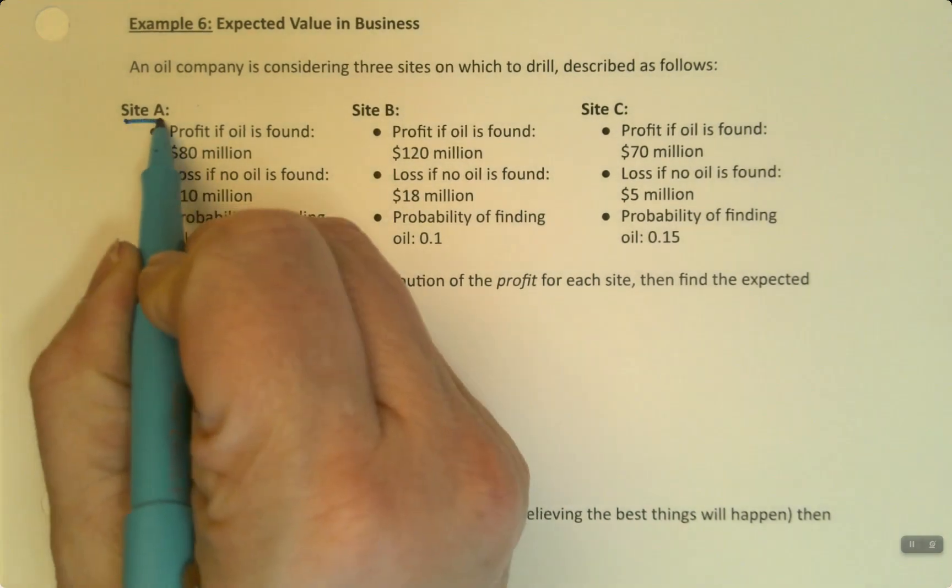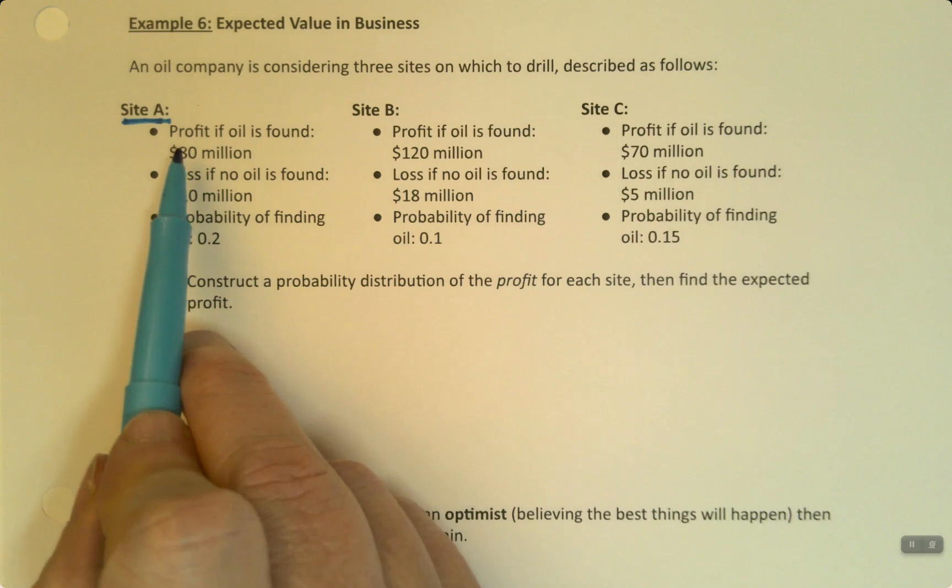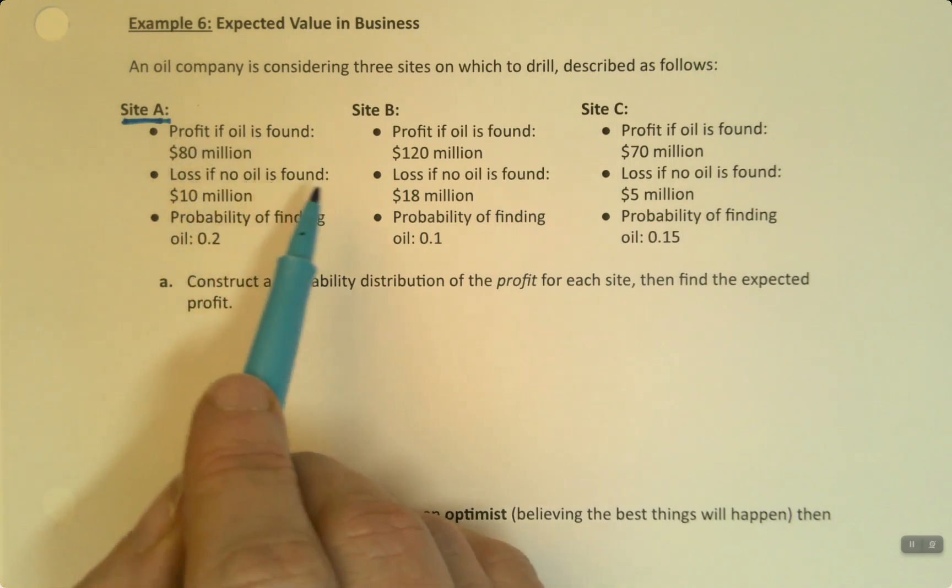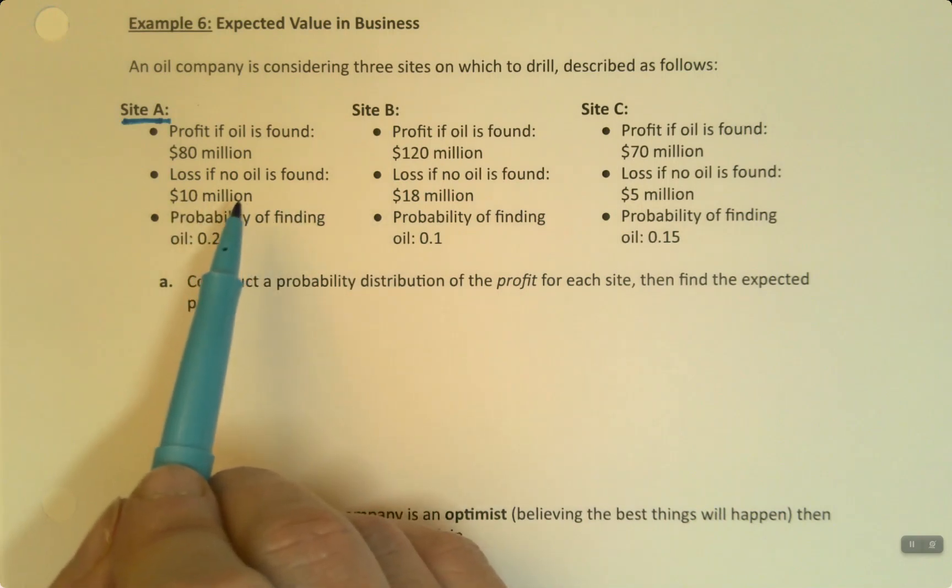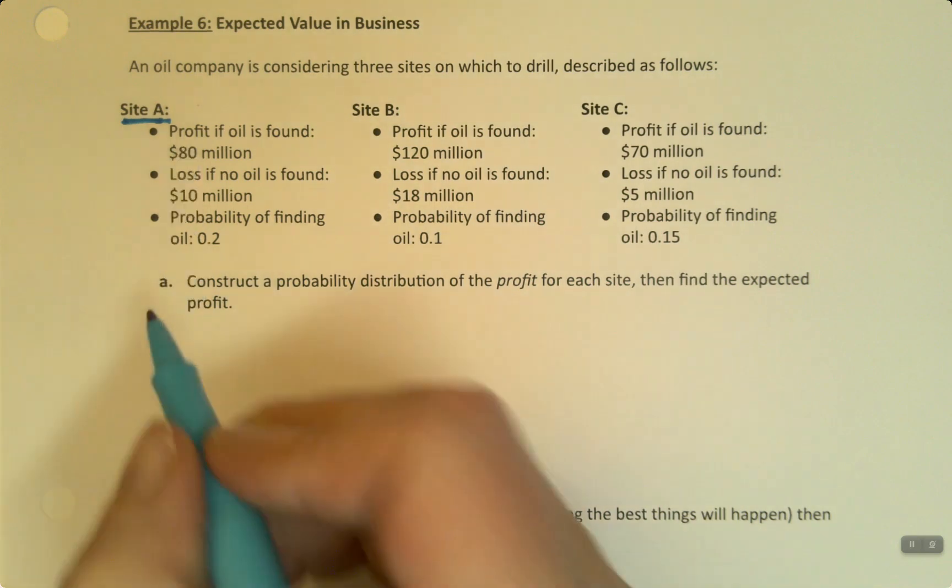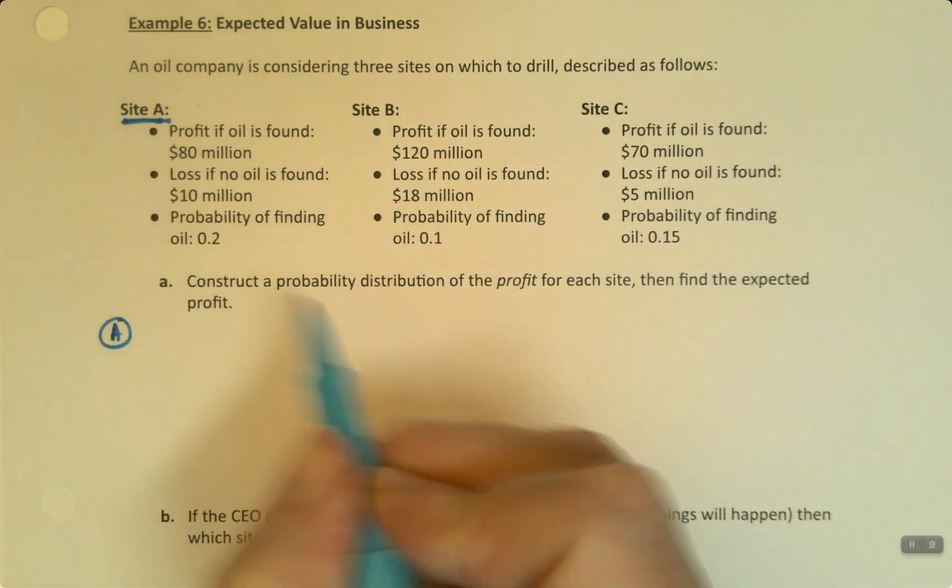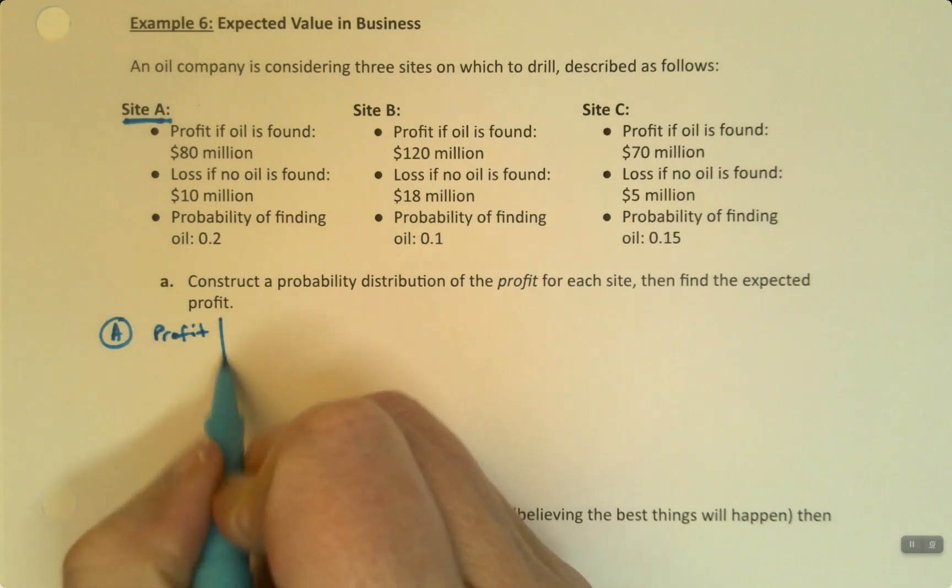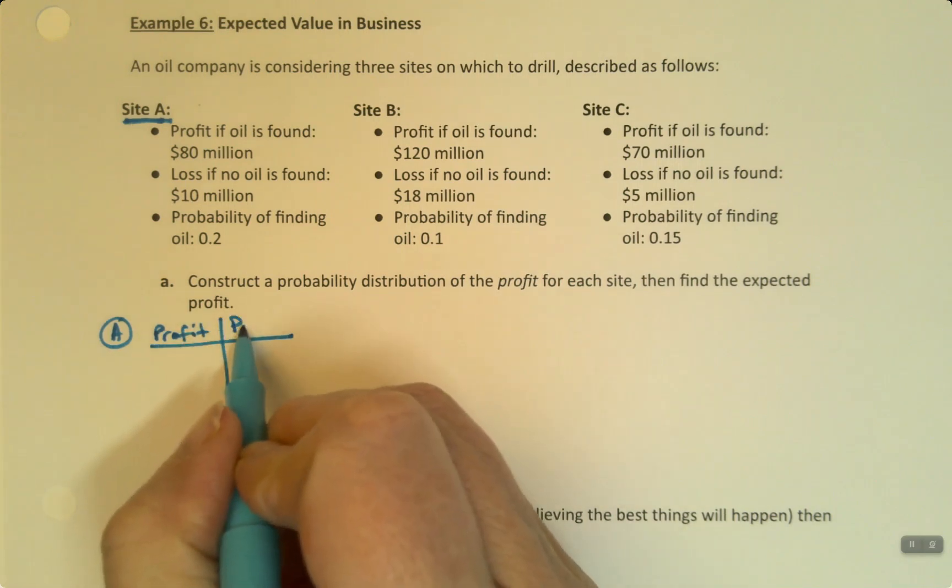So we have site A right here. Site A has potential profit if oil is found of 80 million, and has a loss if no oil is found, which is 10 million. And then the probability of finding the oil is 0.2. So let's make a probability distribution for A. So we want profit over here, and we want the probability over here.